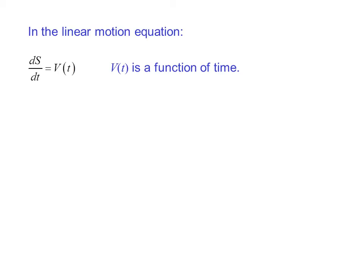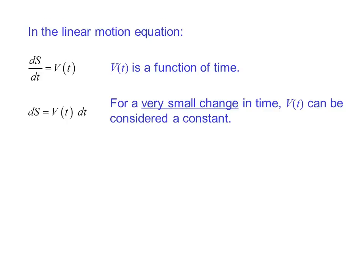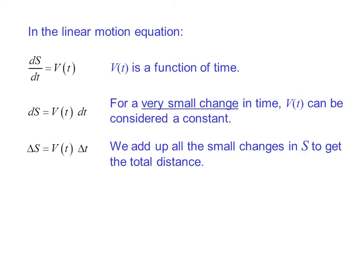In the linear motion equation, ds/dt equals v(t), where v(t) is a function of time. We can move the dt over and get ds equals v(t) dt. For a very small change in time, v(t) can be considered a constant. We have Δs equals v(t) times Δt. We add up all the small changes in s to get the total distance.